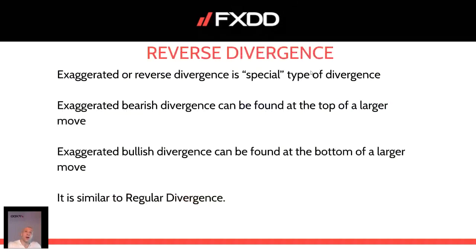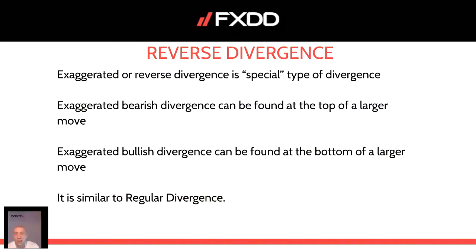And once more, reverse divergence is a special type of divergence. Exaggerated or reverse bearish divergence can be found at the top of the larger move, and exaggerated bullish divergence can be found at the bottom of the larger move. You also trade it with a counter-trend perspective. So, to summarize: regular divergence for counter-trends, hidden divergence for trend trades, and reverse divergence for counter-trend trade setups.